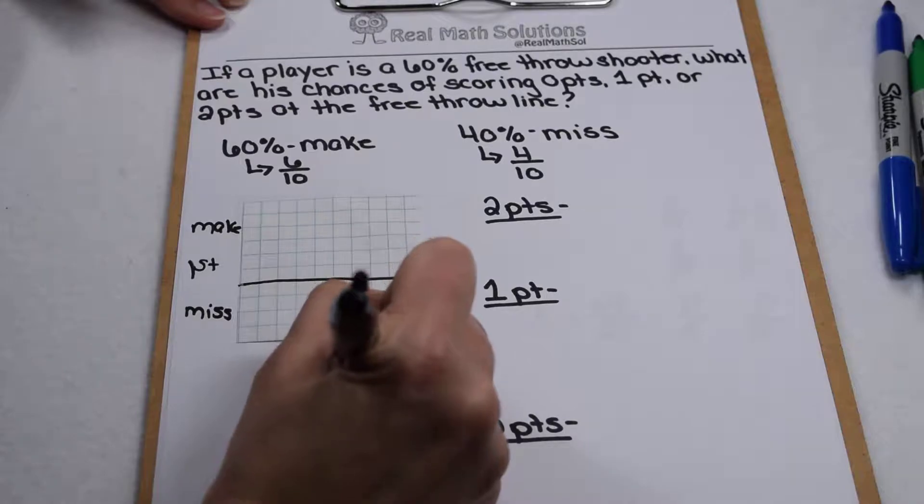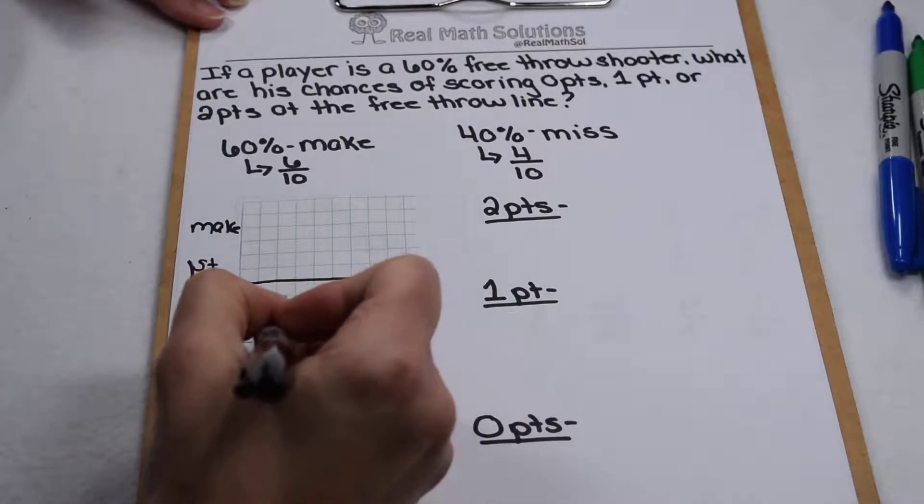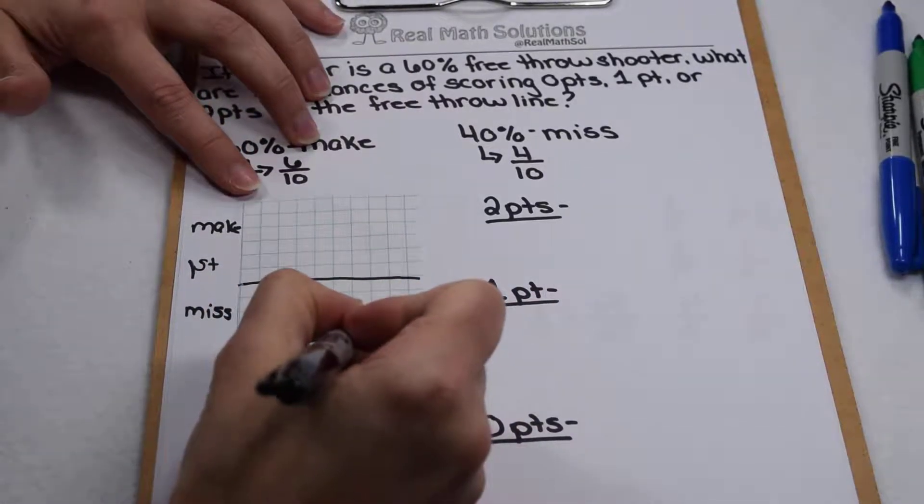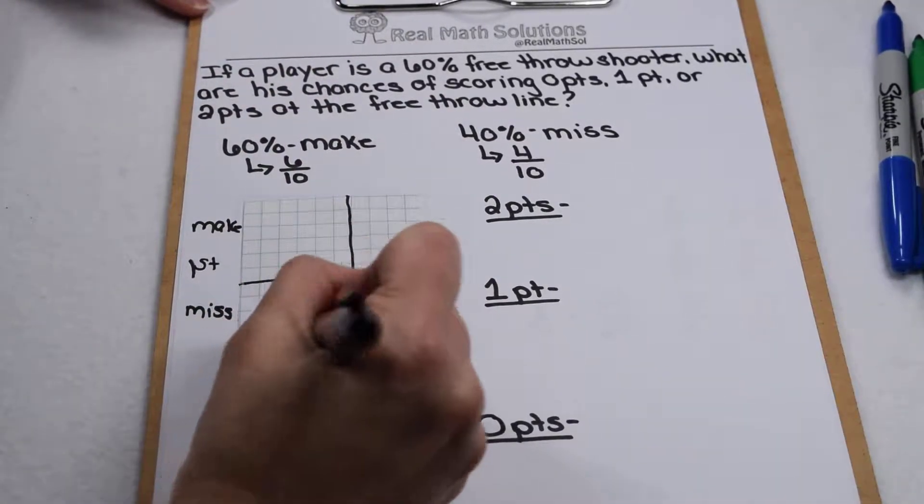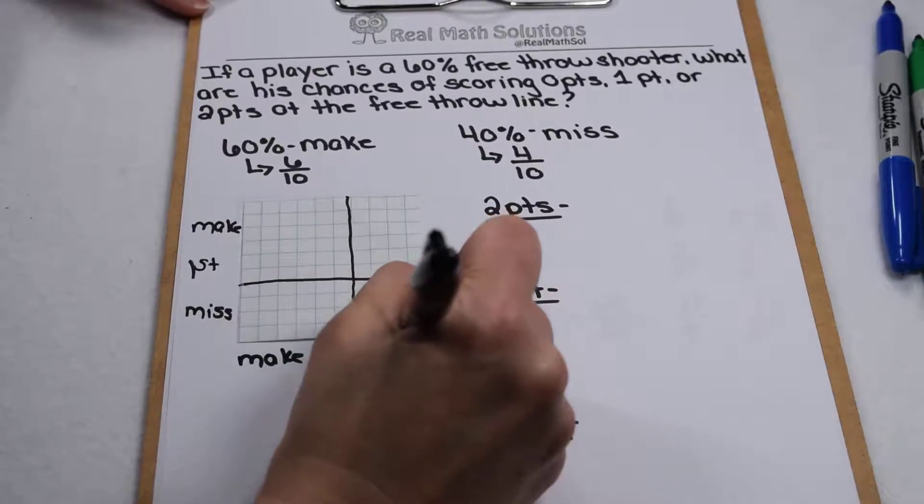Same thing on his second shot. If we now go vertical, I can divide this into 6 columns for making it and 4 columns for missing it.